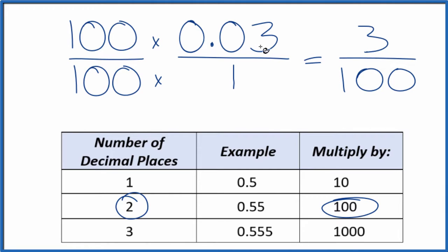So we've converted the decimal 0.03 to a fraction, 3 over 100. If you divide 3 by 100, you'll get 0.03. This is Dr. B. Great. Thanks for watching.